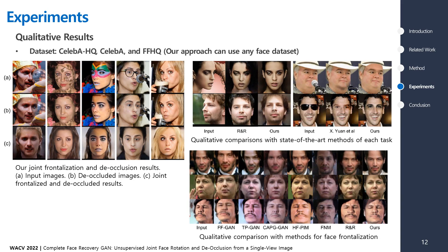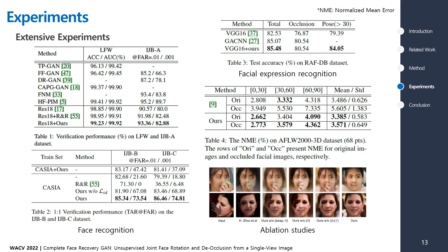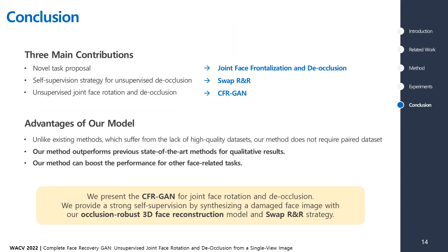This shows qualitative results and comparisons with baselines. To evaluate our boosting performance on face-related tasks, we test our method on facial recognition and facial expression recognition. In conclusion, we present a novel algorithm for joint face rotation and de-occlusion, and our occlusion-robust 3D face reconstruction model and SwapRNR strategy let our model achieve this without any labeled dataset.